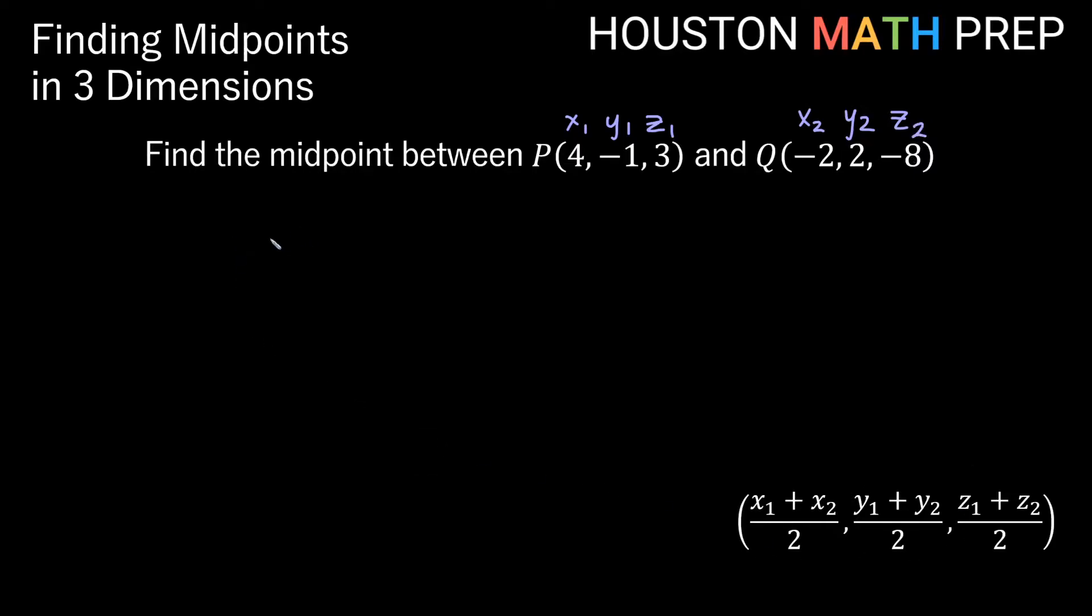We'll go ahead and just use our formula here. So then our midpoint will simply be, we're going to average the x value, so x1 plus x2 divided by 2 would be 4 plus negative 2 divided by 2.